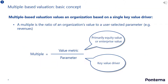So, what is a multiple? Multiples are basically a ratio of an organization's value to a user-selected parameter, such as revenues or profits. When starting a new valuation, the first step is to calculate multiples for a benchmark peer group of comparable organizations for which the valuation is known. The peer group should be comparable to the target organization in all key business aspects, such as target market and stage of evolution, such as startup or mature. The value of the target organization is then calculated by multiplying the peer group's multiple with the respective key parameter or value driver of the target organization, such as revenues or profits.